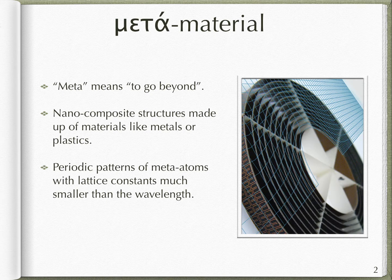These are nano composite structures made up of materials like metals or plastics. Metamaterials are artificial periodic structures of meta atoms with lattice constants that are much smaller than the wavelength of the incident radiation, therefore providing negative refractive index characteristics to them.